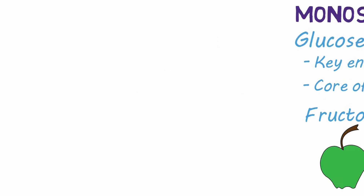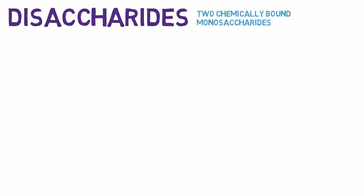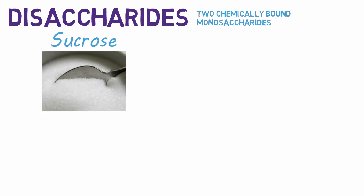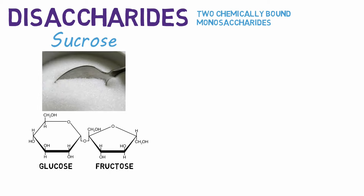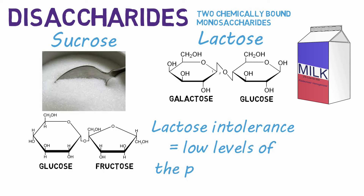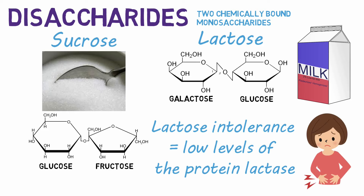You are probably familiar with some disaccharides, which are two monosaccharides chemically bound together. Examples include sucrose, which is common table sugar and is formed from glucose and fructose, and lactose, the sweetener in milk formed from galactose and glucose. People who are lactose intolerant have low levels of the protein lactase, which breaks down lactose, and if they can't break down lactose, then the stomach will get pretty upset.